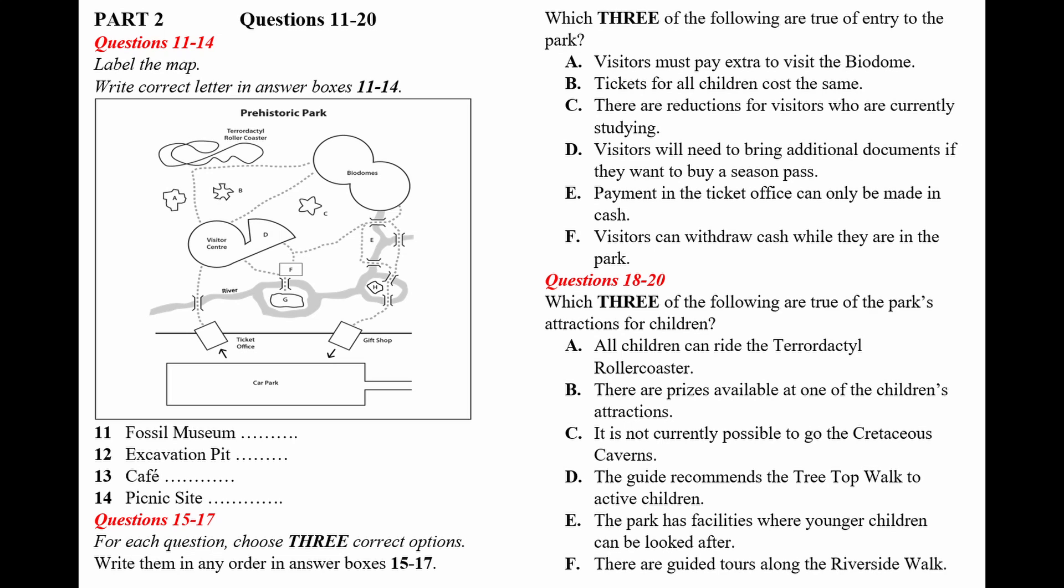You can take paths from the Fossil Museum, Café and biodomes to the riverside walk in the very east of the park. Here, boardwalks and bridges weave over a network of streams and lead to the car park via the gift shop. Before you get there, though, your route leads you across a small island with a tranquil picnic site, and I must say, the weather looks perfect for a picnic today. Now, does anybody have any questions? Before the conversation continues, you have some time to look at questions 15 to 20.